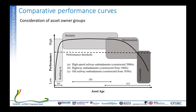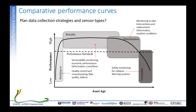Thinking about data collection strategies, the type of sensors needed differs by lifecycle stage. In the bedding-in stage, sensing relates to quality control and commissioning — looking at ride quality or defects. During the main reliable stage, serviceability monitoring focuses on economic performance, sensing deformation or measuring costs and fines. As the asset enters the deterioration stage, monitoring supports planning interventions and replacements. In the final unreliable stage, sensors are focused on safety warning systems for collapse.